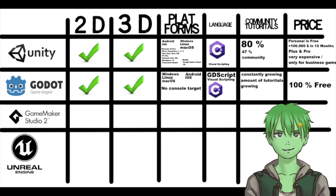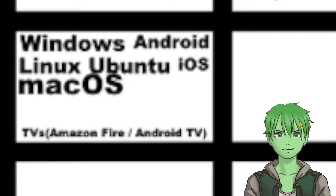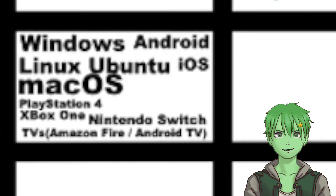GameMaker supports 2D and also supports 3D, but the 3D version of GameMaker Studio is very limited, so it's really only meant for 2D. For target platforms, it supports Windows, Linux, Ubuntu, and MacOS, as well as Android and iOS. It also supports TVs such as Amazon Fire and Android TVs, and there's also PlayStation 4, Xbox One, Nintendo Switch, and HTML5 so people can play your games in a browser.